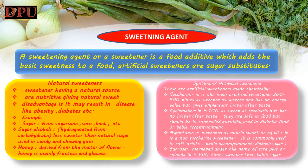Second type is synthetic sweeteners, which are artificial sweeteners made chemically. Examples: 1. Saccharin — the main artificial sweetener; it is 300–500 times sweeter than sucrose and has no energy value, but leaves an unpleasant bitter aftertaste. It has limited use in the food industry, generally served with tea or coffee. 2. Cyclamate — one-tenth as sweet as saccharin but has no bitter aftertaste; safe in food but should be used in controlled quantities; used in diabetic food and as a table accompaniment. 3. Aspartame — marketed under the name NutraSweet or Equal; a non-saccharin sweetener; commonly used in soft drinks and as a table accompaniment as diabetic sugar.